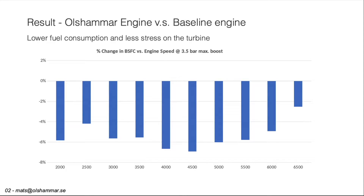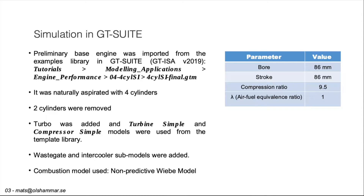In the coming slides I will show exactly how we did these simulations. The simulations were done in GT-Suite, a common software used in the automotive industry. The preliminary base engine was imported from the examples library. It was a naturally aspirated four-cylinder engine. Two cylinders were removed, a turbo was added, and a wastegate and intercooler were also added. We used the non-predictive V-model combustion model.